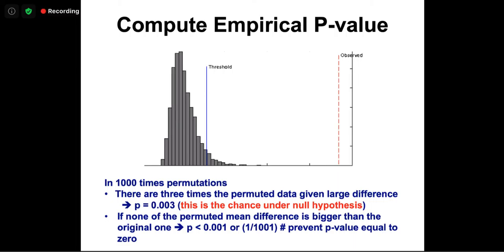Because this is a permutation approach, even permuting forever you still cannot get a p-value of exactly zero — there's always a small chance. So you report p-value less than 0.001, or sometimes people add one to the numerator and denominator. It doesn't change the conclusion. The advantage of permutation is no distribution assumption required, and some hidden correlations are also addressed. The disadvantage is you need a large number of samples — fewer than 10 samples is insufficient for 1,000 permutations. But computers are getting so powerful that even one million permutations can finish in a reasonable time.